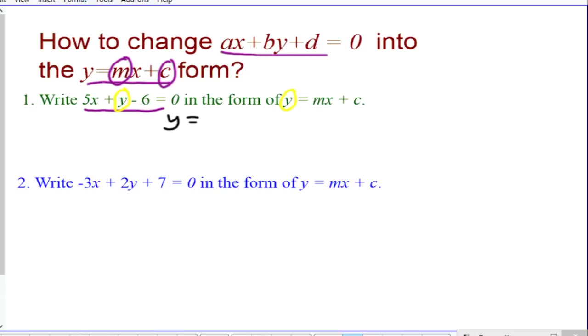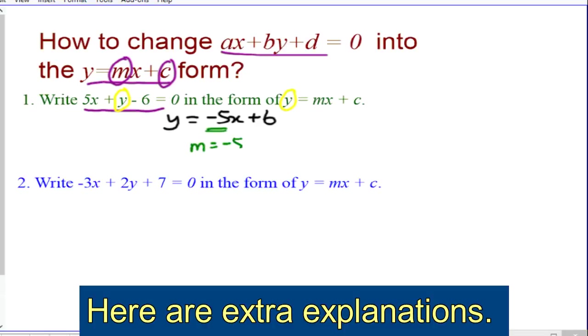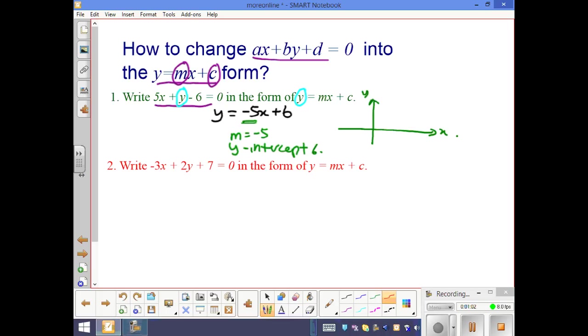So in this case, 5X goes to the other side become minus 5X, the minus 6 goes to the other side become plus 6. And basically here what we have is that the gradient here is negative 5, and then the Y-intercept here is 6.